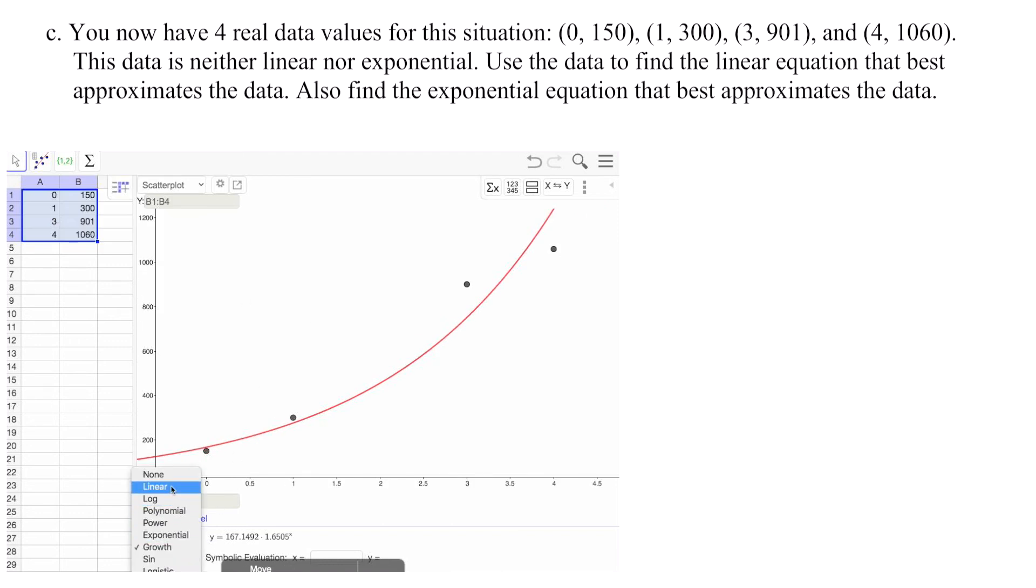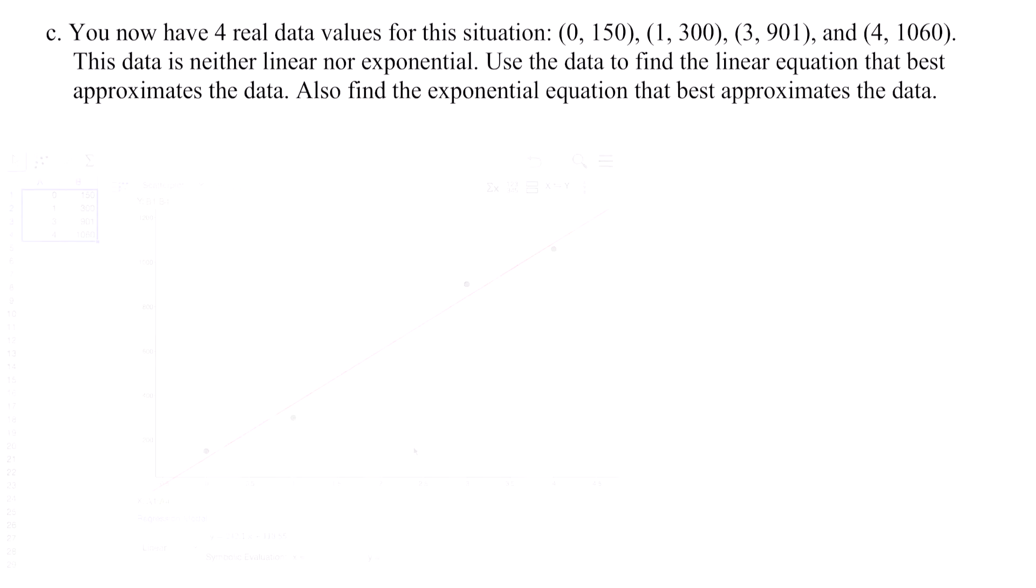Now that that's all entered, we can highlight everything and hit Two Variable Regression Analysis. We have a new growth model. But let's first look at the linear model. So here's our new linear model. The new linear model is Y equals 242.1X plus 118.55.